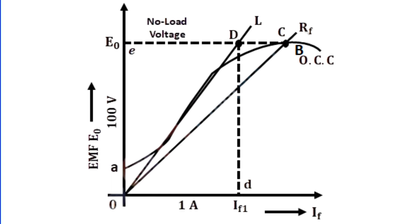The field resistance line at no load is noted. For example, if the field resistance of the DC shunt generator is 100 ohm at no load, then by considering the voltage and current axis as 100V/1A, the field resistance RF line is drawn. The field resistance line cuts the OCC curve at point C. The voltage on the Y axis is no load voltage E0.